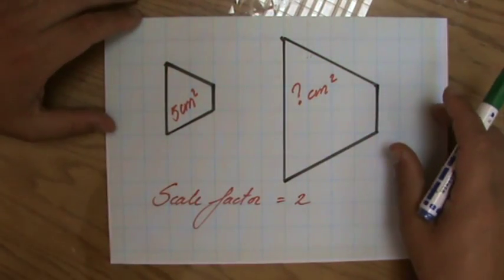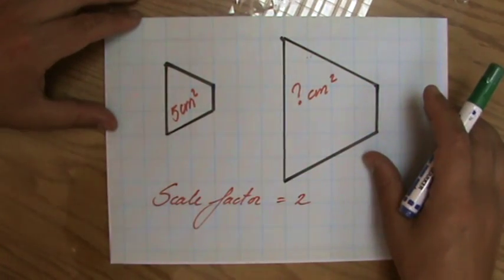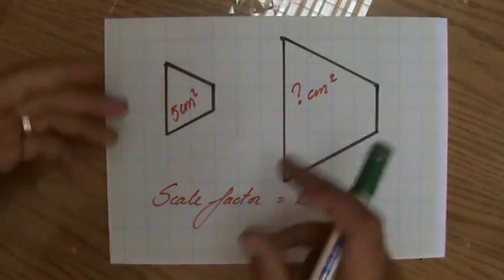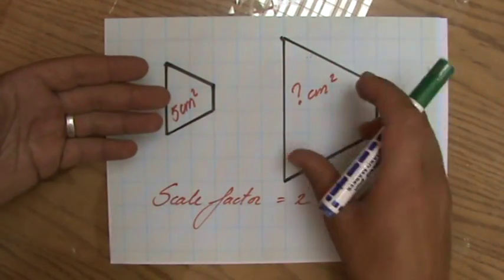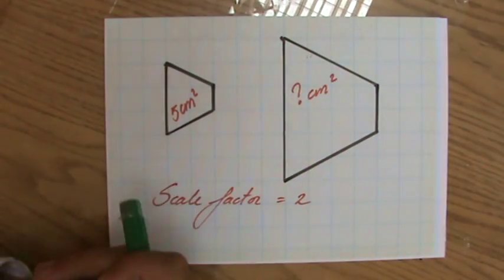Now some students, and those are the students who don't really understand what similarity is, are going to say, well, scale factor is 2, so it's twice as big, so 5 times 2, the area is going to be 10 cm squared.